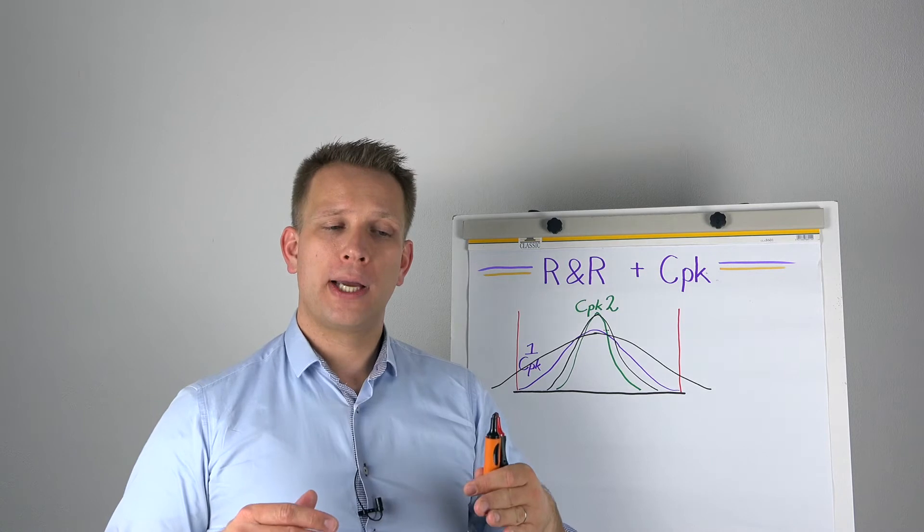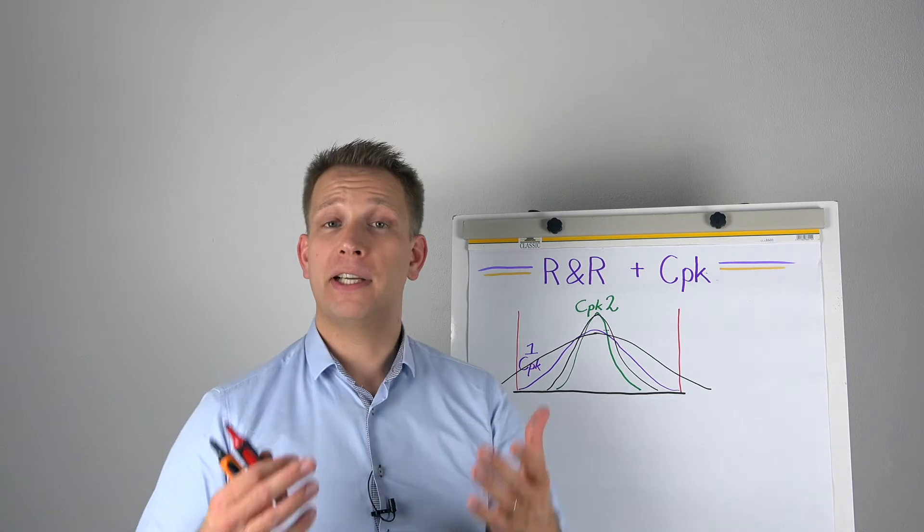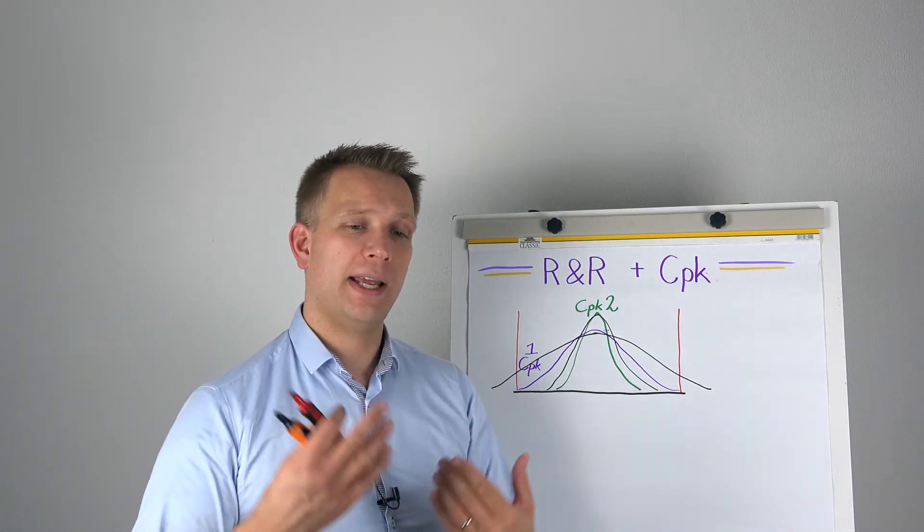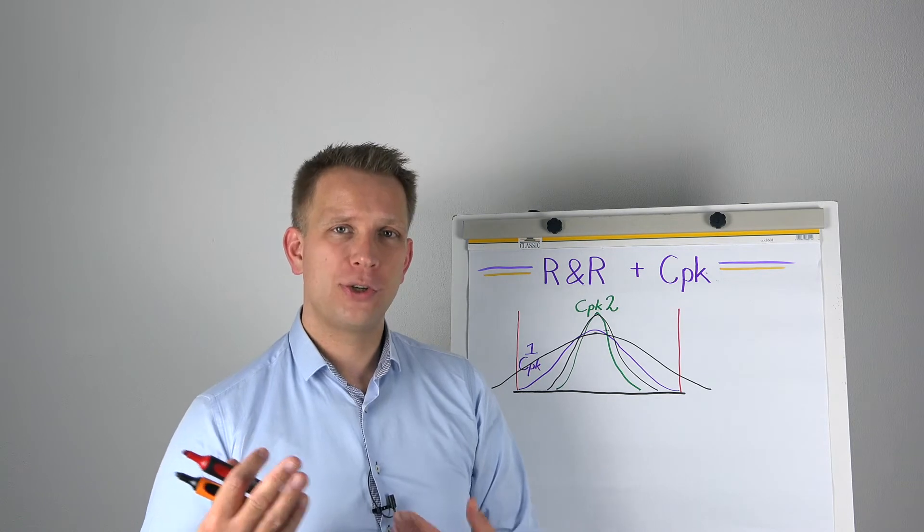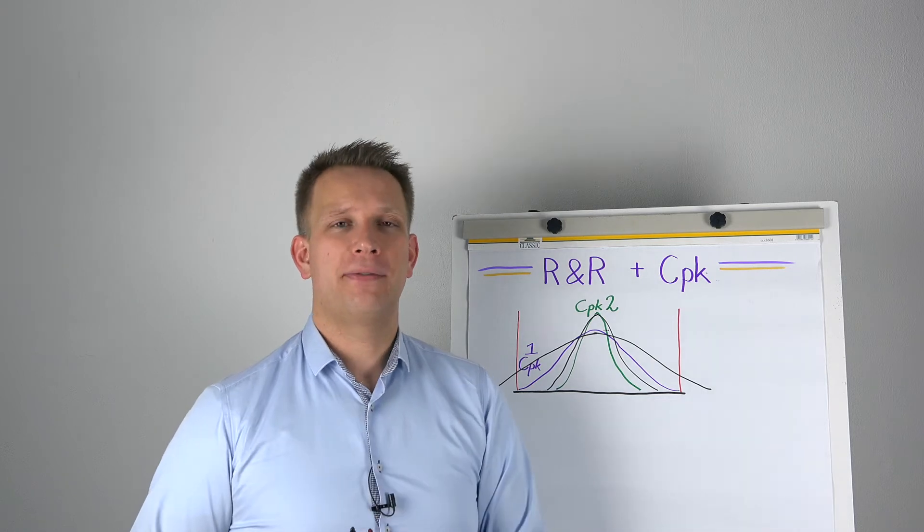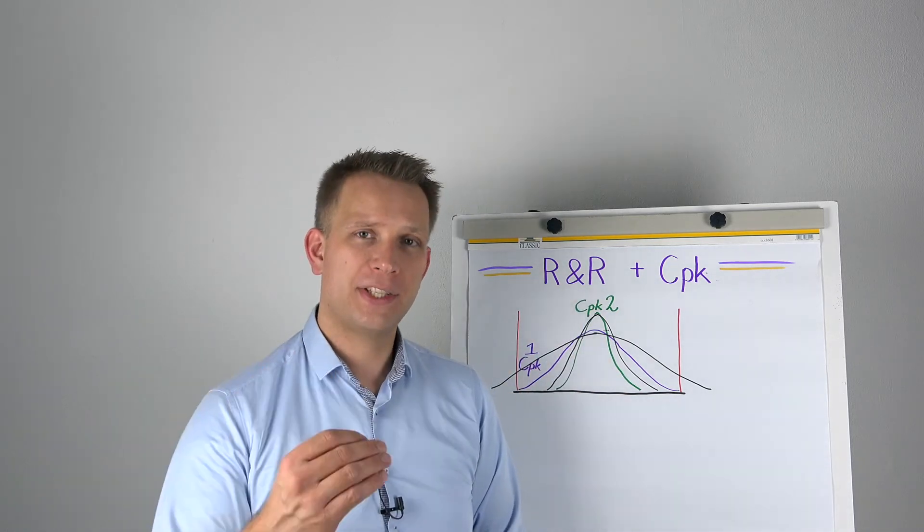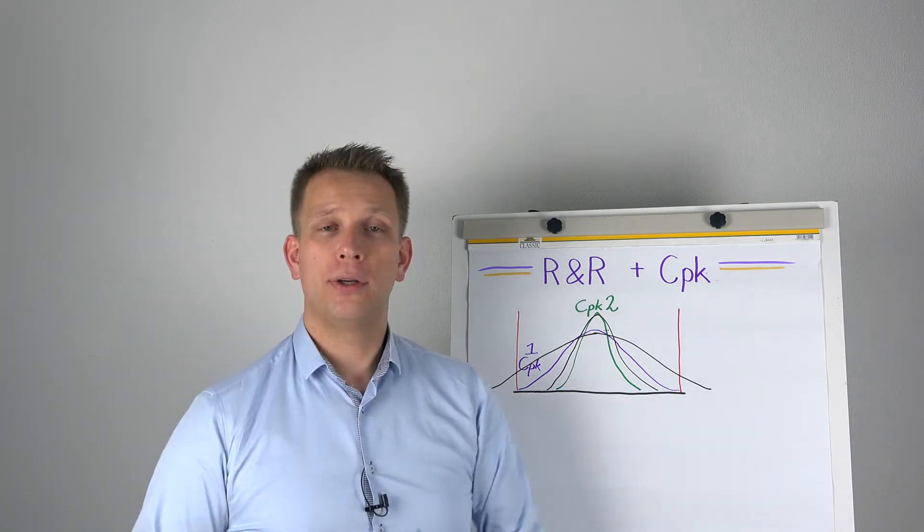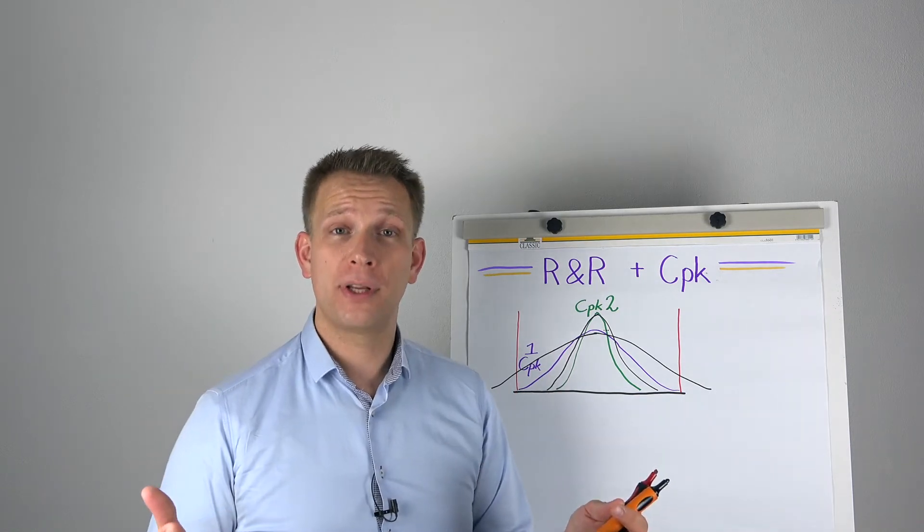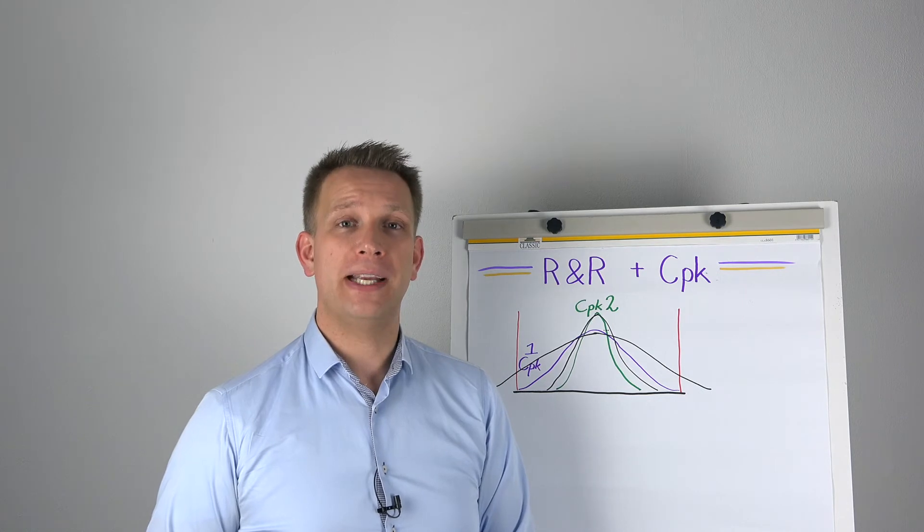So you know that based on tolerance limits we've actually got a very nice measurement system. So we've got an okay-ish and good, and you add those together. If you have a measurement system that gives you an R&R of less than 10 percent based on the process variation, and less than 10 percent based on the tolerance, then you've got a great system. You know, you are very sure that everything is going fine.